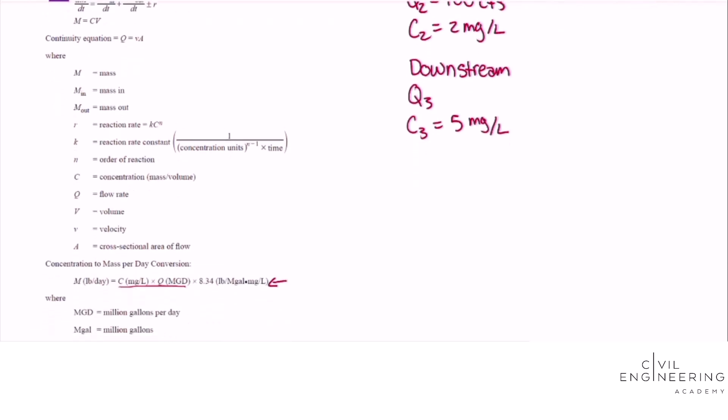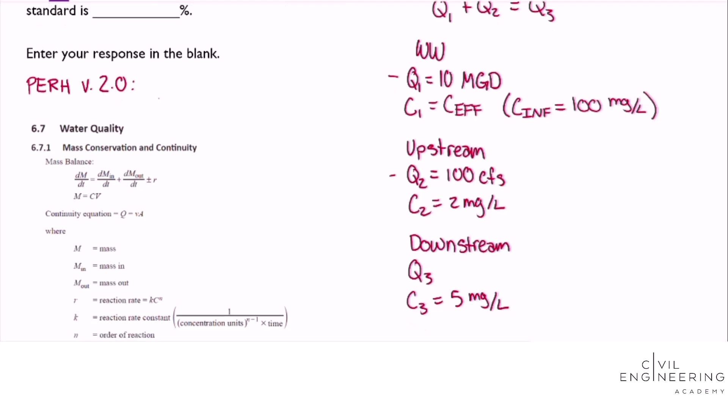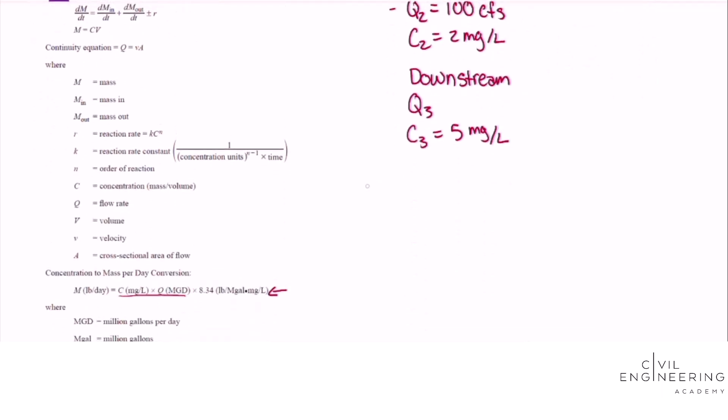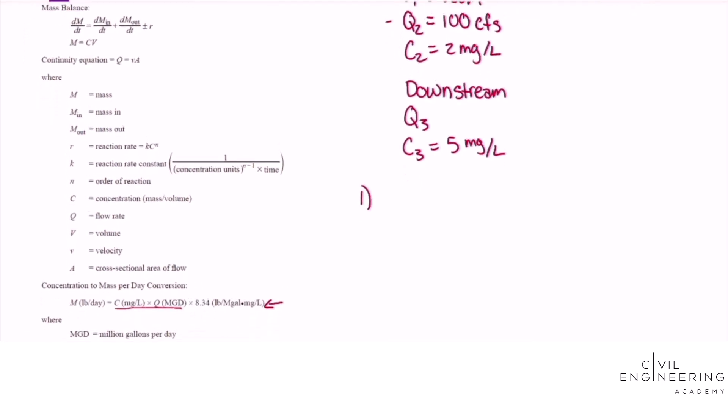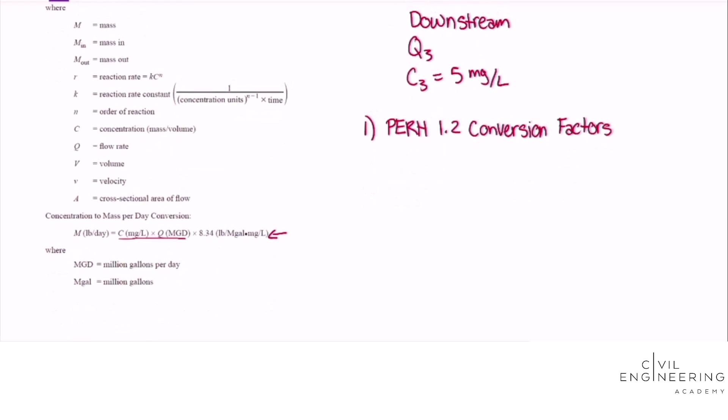The first thing we need to do is convert one of these two streams so that they're in the same units. I'm going to convert the cubic feet per second to million gallons per day using the PE reference handbook section 1.2 conversion factors and you can look up the conversion from cubic feet per second to million gallons per day.